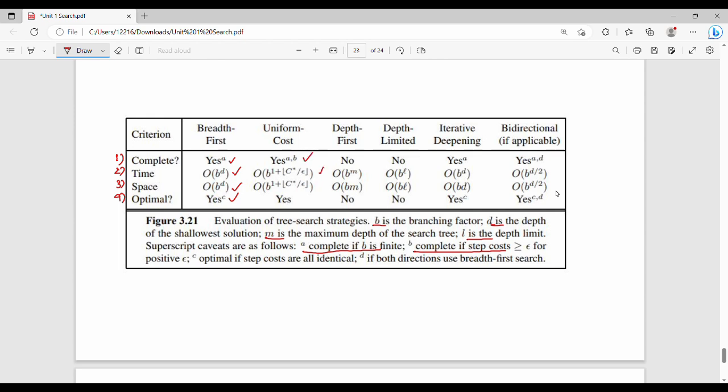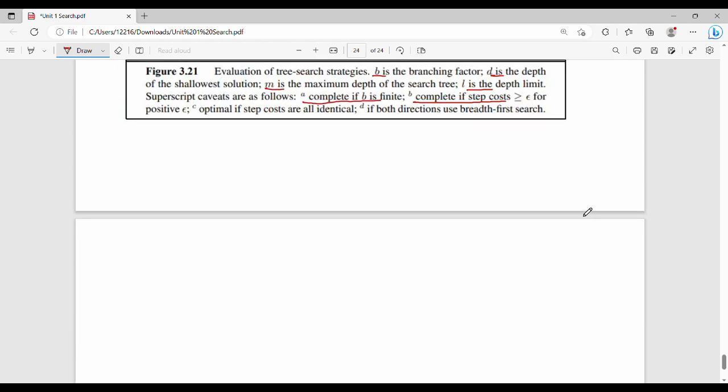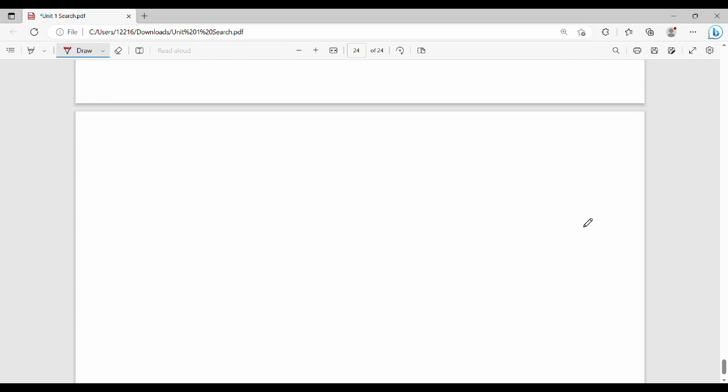That is uniform cost, complete time complexity is optimal. Then depth-first, complete time is optimal and space. Then iterated depending on time and space. Then iterated depending on time and space. So in the time and space you can see it. So that derivation is not necessary. It is not necessary.